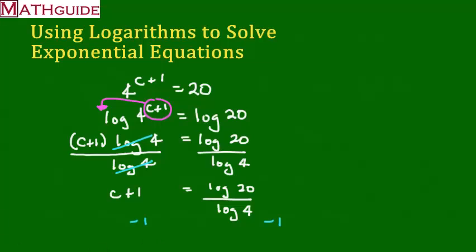Now, once I do that subtraction, I need a little bit more space. I'm going to write it up here. I get c equals log 20 over log 4, and then I'm subtracting 1 from all that.